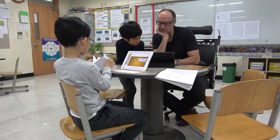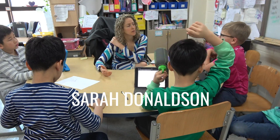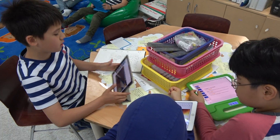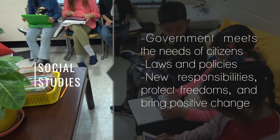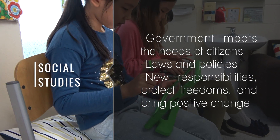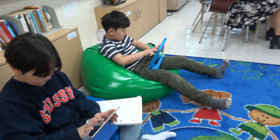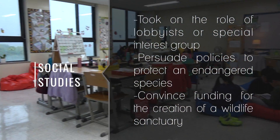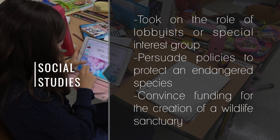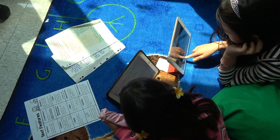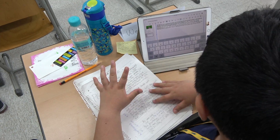At the start of the project, our third grade teachers — John Berry, Sally Merriman, Sarah Donaldson, and Stacey Trink — explored the idea of how the government meets the needs and demands of its citizens through the process of making laws and policies that create new responsibilities, protect freedoms, and create positive change. They used this concept and took on the role of lobbyists who seek to persuade members of the government to create policies that will protect a specific endangered species and fund the creation of a wildlife sanctuary for the species. Students also learned about the endangered species they chose to protect through non-fiction resources, and used their informational writing skills to write about them.